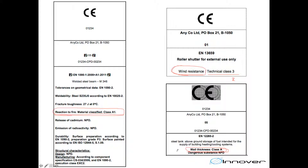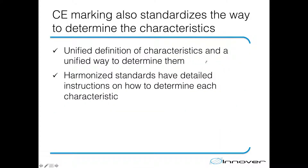To reiterate: CE marking is not a sign of quality. A CE marking has nothing to do with quality. CE marking in construction products is just a list of essential characteristics that can be declared, and the way they have been declared and determined is always the way presented in the standard, so these products are comparable with each other. In addition to standardizing the characteristics, CE marking also standardizes the way the manufacturer determines those characteristics.